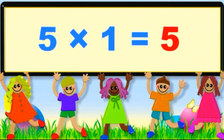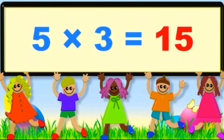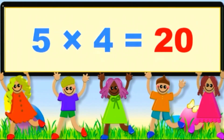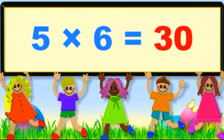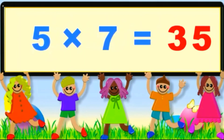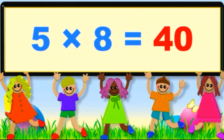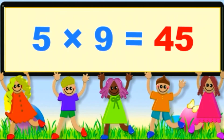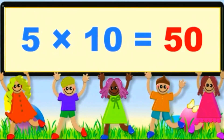5 1s are 5. 5 2s are 10. 5 2s are 10. 5 3s are 15. 5 4s are 20. 5 4s are 20. 5 5s are 25. 5 5s are 25. 5 6s are 30. 5 6s are 30. 5 7s are 35. 5 7s are 35. 5 8s are 40. 5 8s are 40. 5 9s are 45. 5 9s are 45. 5 10s are 50. 5 10s are 50. Let's do it one more time.